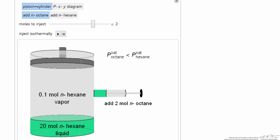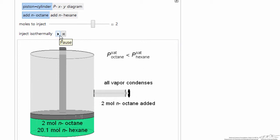Here's the interactive simulation where we're going to inject octane into a vapor-liquid mixture of hexane. When I push the play button, you'll notice that we end up with all liquid in the system.